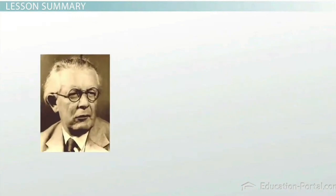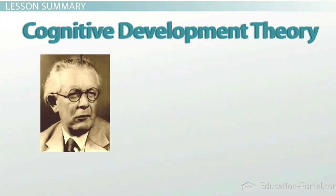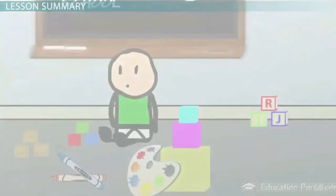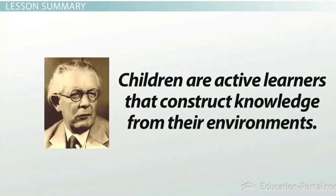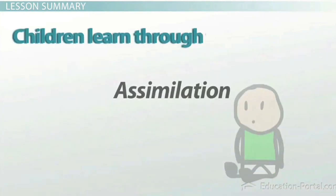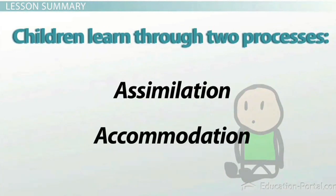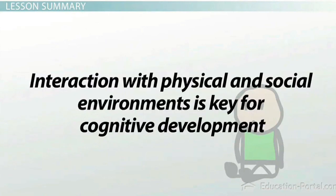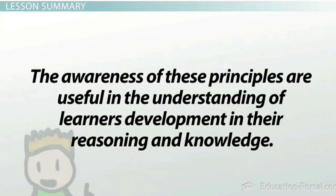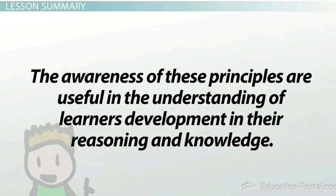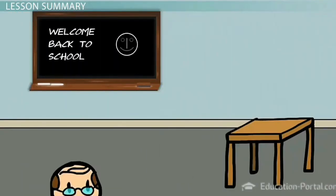To summarize, Piaget developed a theory of cognitive development based on multiple assumptions of how learners interact with their environment and with new information and knowledge. He proposed that children are active learners that construct knowledge from their environments. Children learn through assimilation and accommodation, and complex cognitive development occurs through equilibration. Interaction with physical and social environments is key for cognitive development, and development occurs in stages. These principles are useful for understanding learners' development, reasoning, and knowledge, and should be incorporated in the classroom by educators.